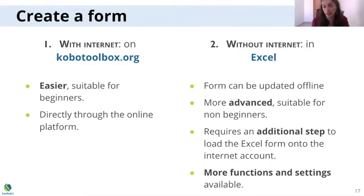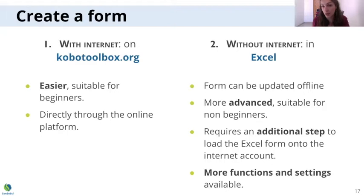Doing it online is very easy and very user-friendly. If you just start using Kogo Toolbox, that's the way to go — you do it directly from your account with the blue New button. Excel is a bit more difficult, but you have lots of amazing options. Once you understand how Excel forms work, you'll see that you can go faster at moving questions, changing question types, and you can have complex coding on the forms.